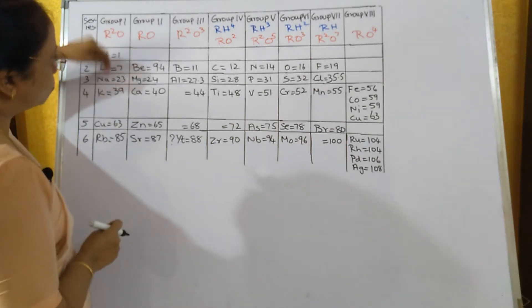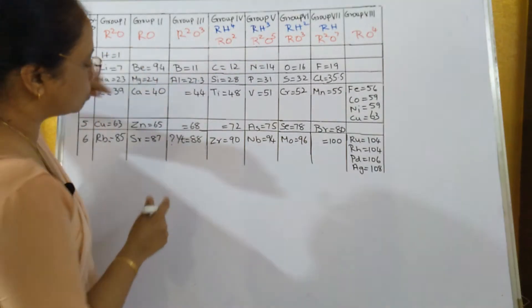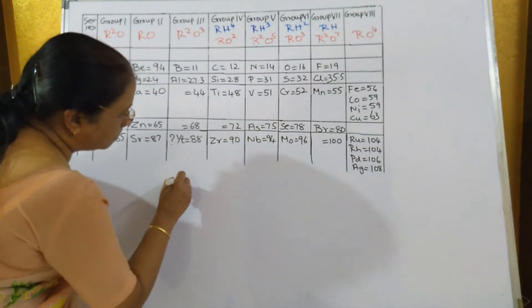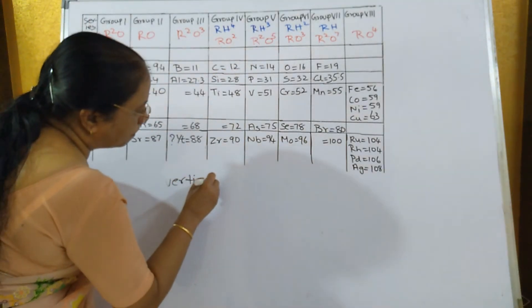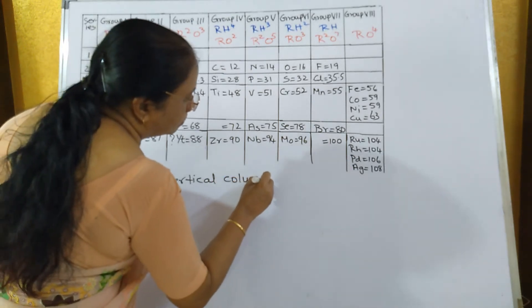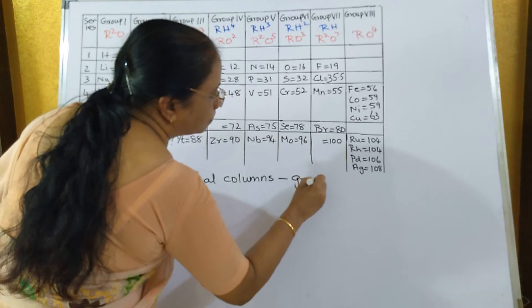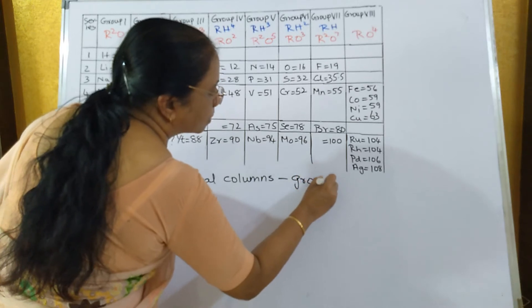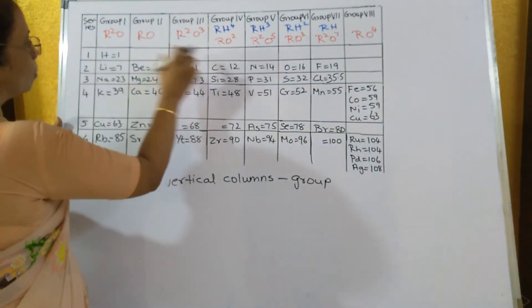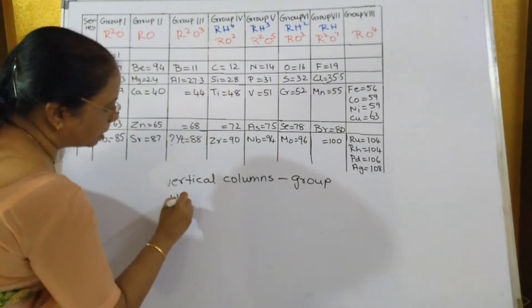He called the vertical columns 'groups' — vertical columns were known as groups. And the horizontal rows were known as 'periods'.